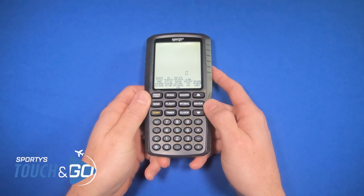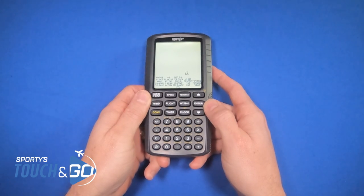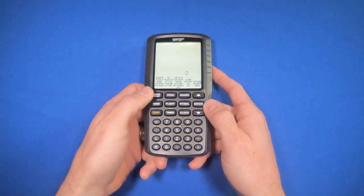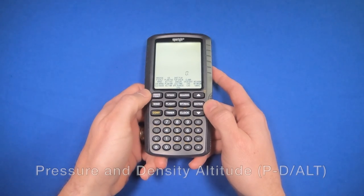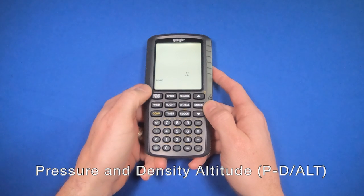How to do the pressure density altitude calculation using the Sporty Z6B flight computer. I'm going to start by selecting the heading ground speed pressure density altitude button - that's the menu.